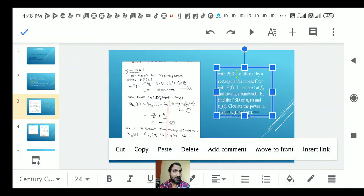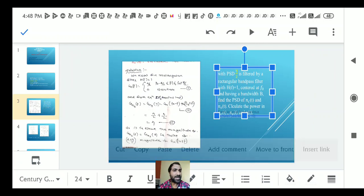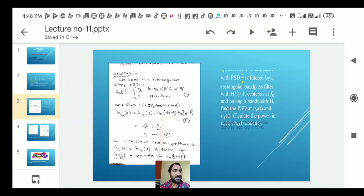Here is white noise with PSD eta by 2, filtered by a rectangular bandpass filter with h(f) equal to 1, centered at f naught and having bandwidth b. Find the power spectral density of eta c and eta s, and calculate the power in NCT, NST, and NT.